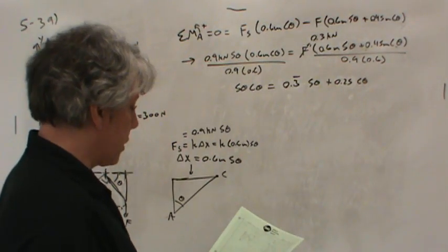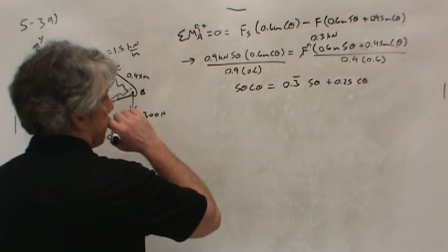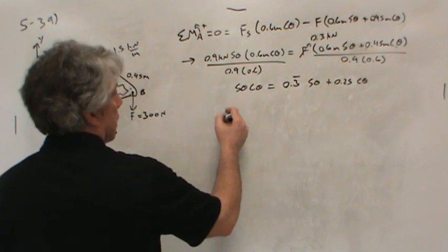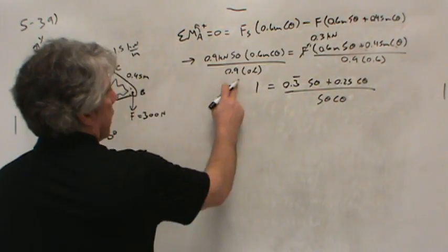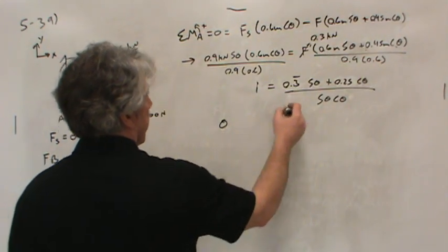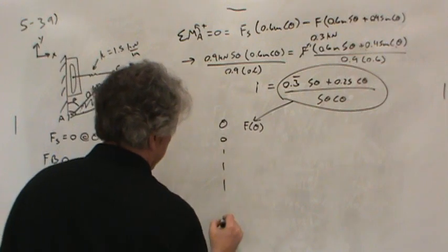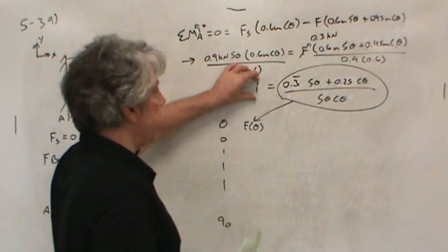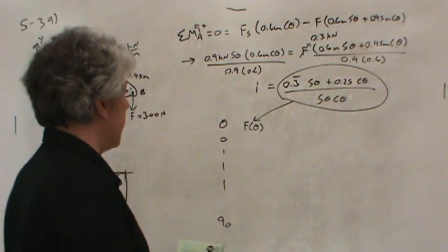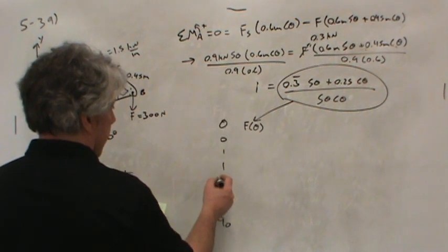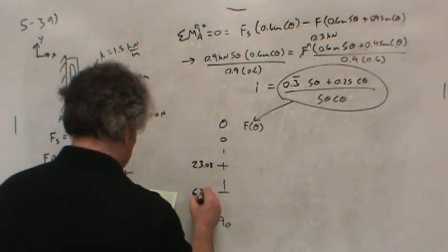So what I decided to do is go into Excel, and I plotted this. I just moved sine theta, cosine theta to the other side. Basically, I just plotted this whole thing as a function of theta. So I had theta in one column, and this whole function in the other column, F of theta, let's call it. And I plotted it between 0 degrees all the way down to 90 degrees. What you've got to understand is when this is equal to 1, we have equilibrium.